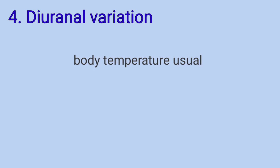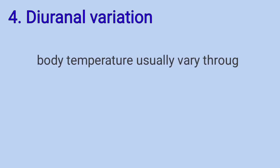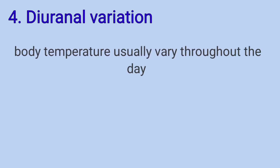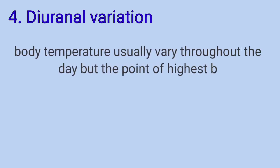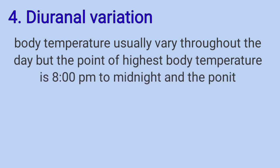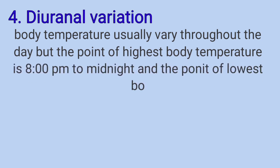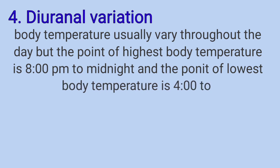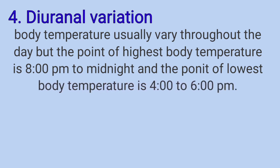The fourth one is diurnal variation. Body temperature usually varies throughout the day, but the point of highest body temperature is 8pm to midnight, and the point of lowest body temperature is 4 o'clock to 6am.